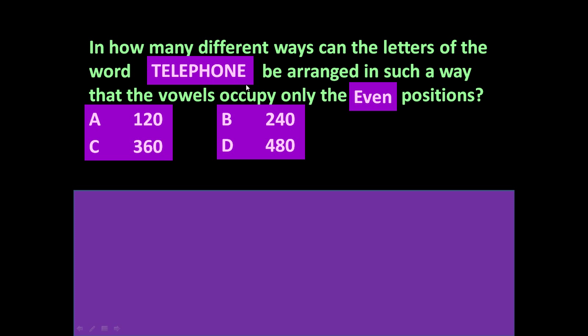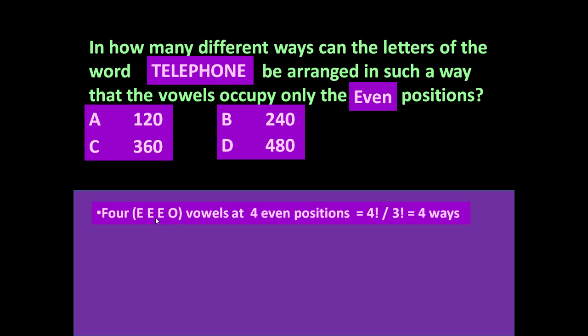Now if we change the word DETAIL to the word TELEPHONE: in how many different ways can the letters of the word TELEPHONE be arranged such that the vowels occupy only the even positions? Let us count the vowels: E, E, O, E — there are four vowels, of which three vowels are the same.